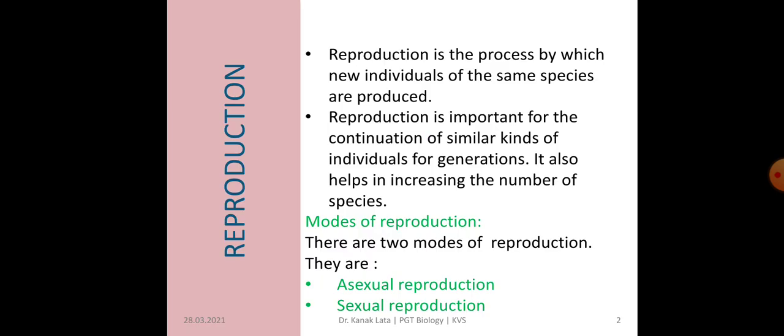First we will discuss about Reproduction. What is Reproduction? It is a biological process by which new individuals of the same species are produced. It helps in continuation of similar kinds of individuals from generation to generation, and it also helps in increasing the number of species. So reproduction is very important.